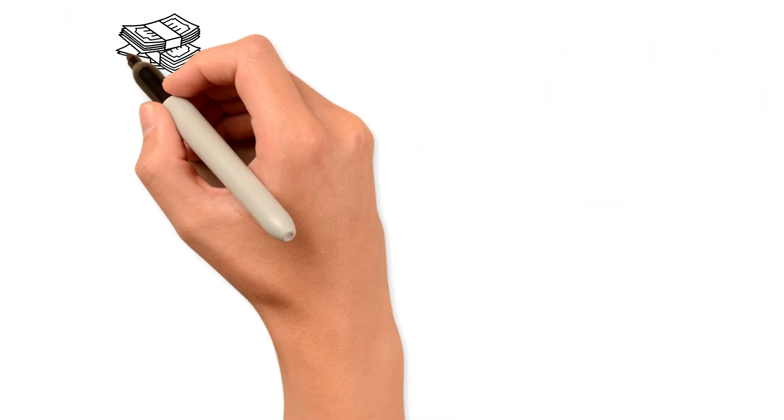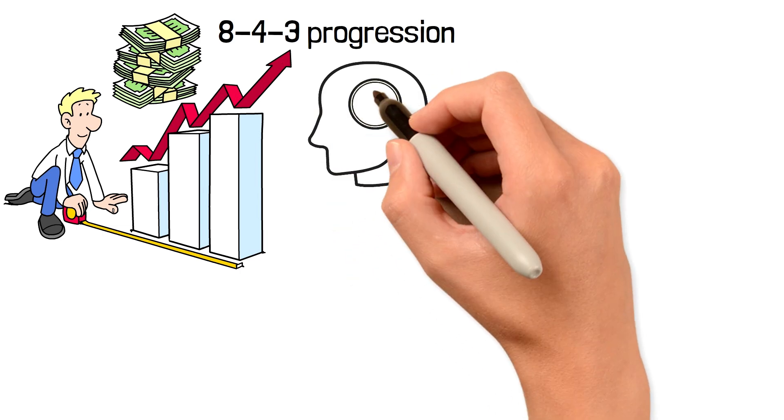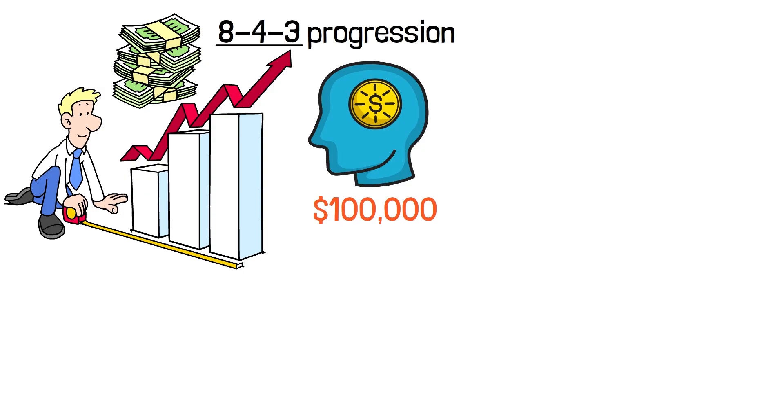The more you can invest early, the faster you move through the 8-4-3 progression. But regardless of how much you invest, the pattern holds. Each successive $100,000 comes faster than the last.